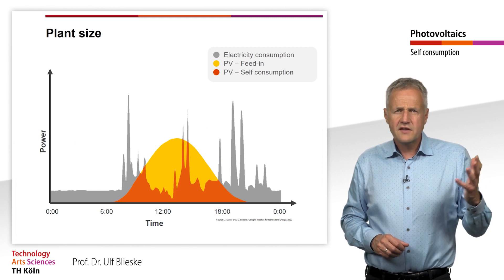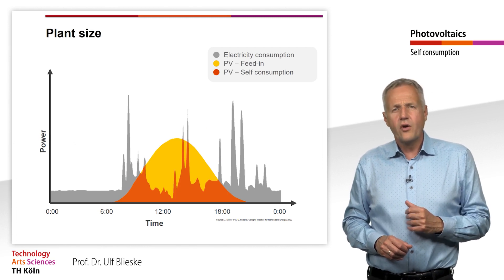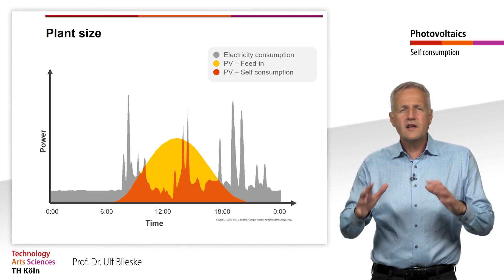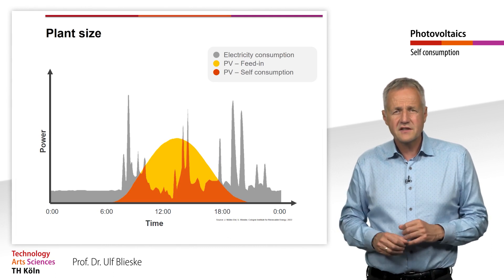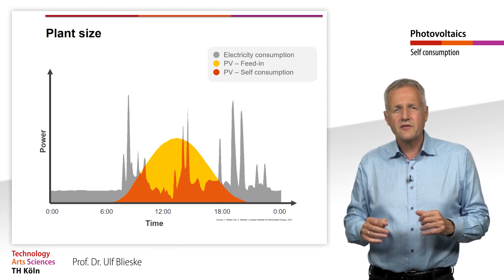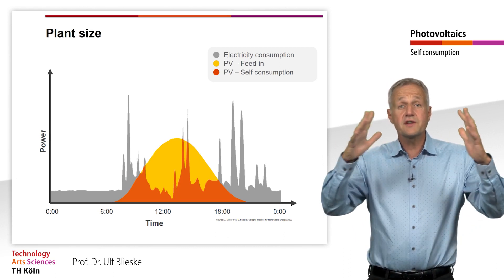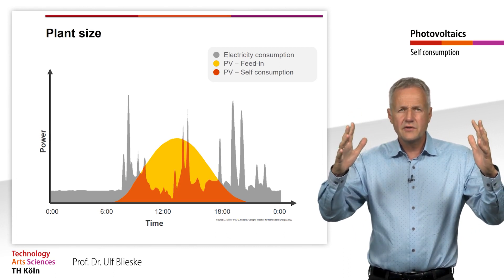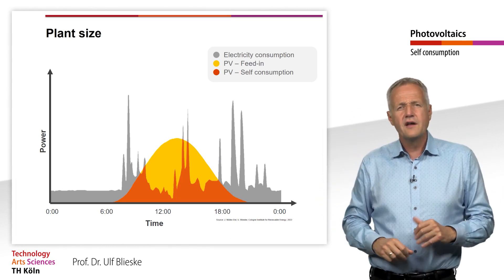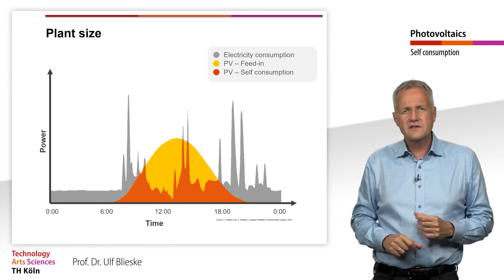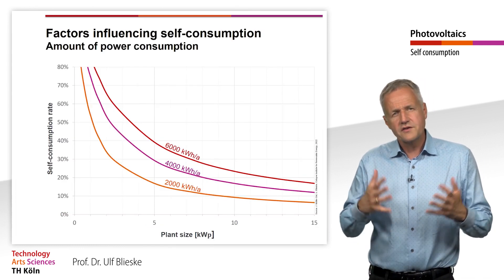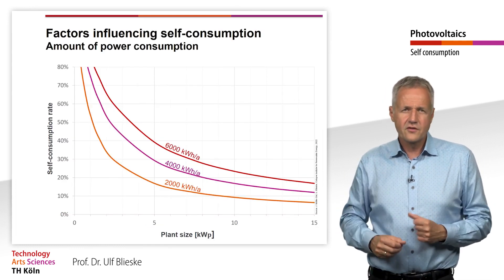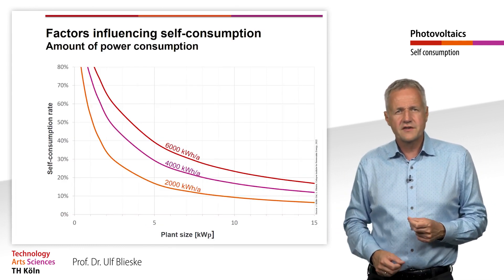With a significantly smaller system, only a small amount of electricity is fed into the public grid and the share of self-consumption increases. In return, however, less electricity is generated, which is not so good for the environment.